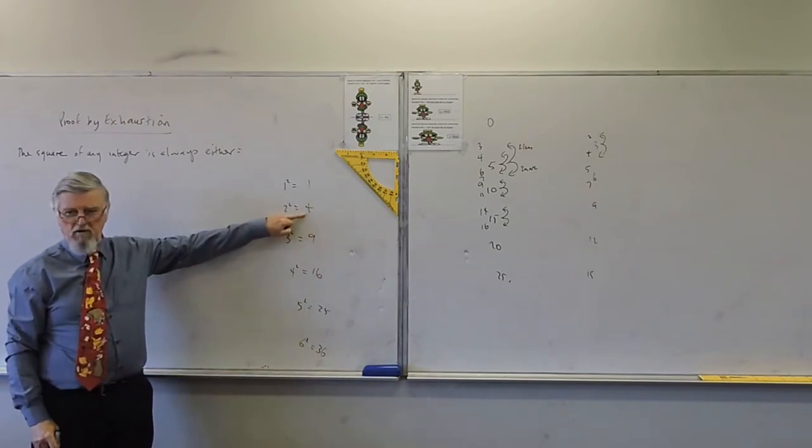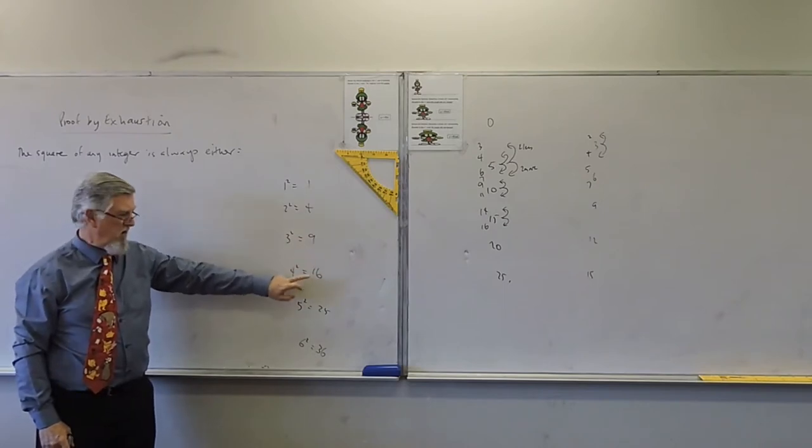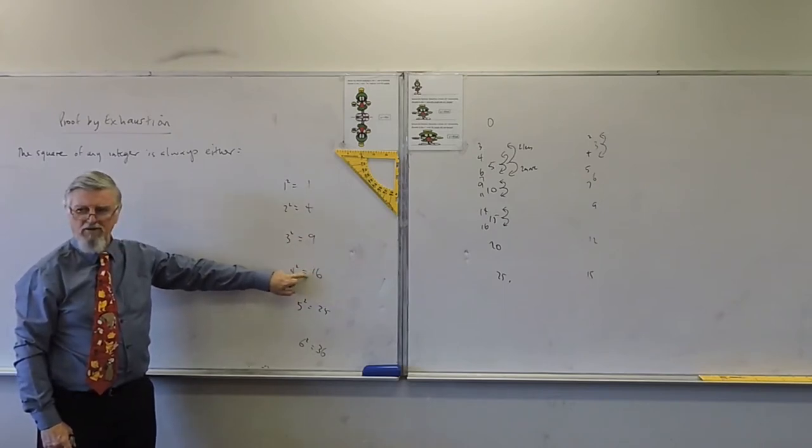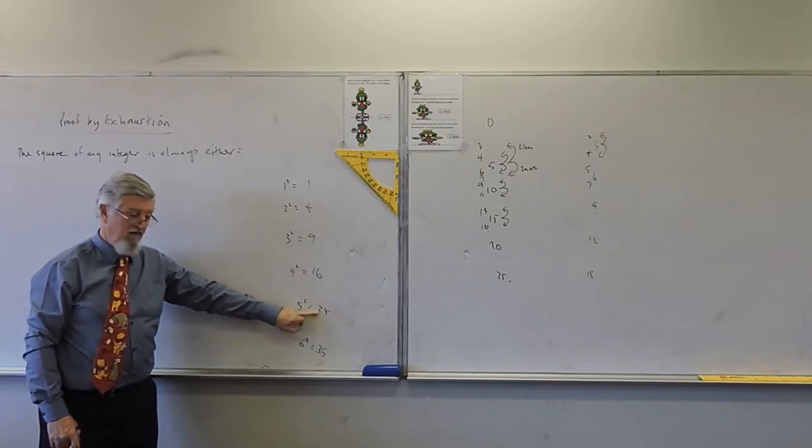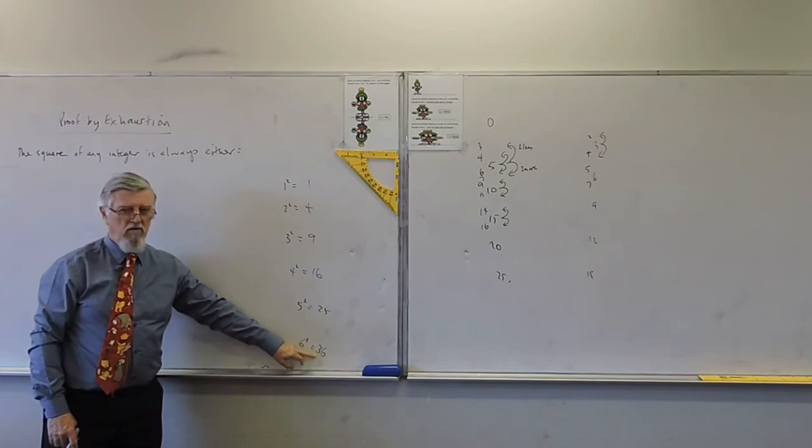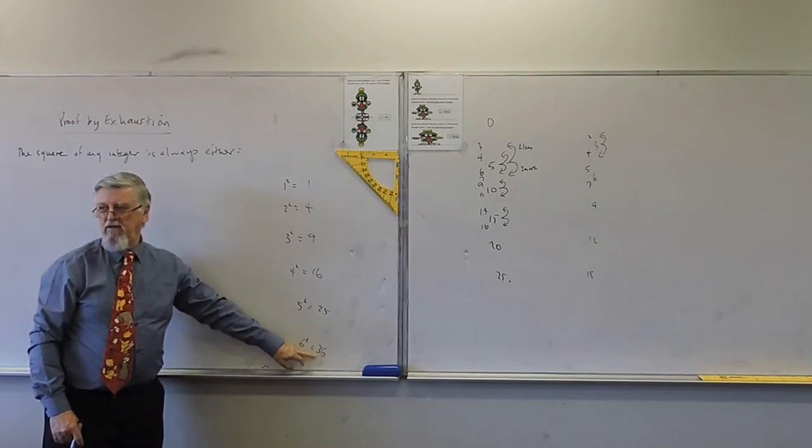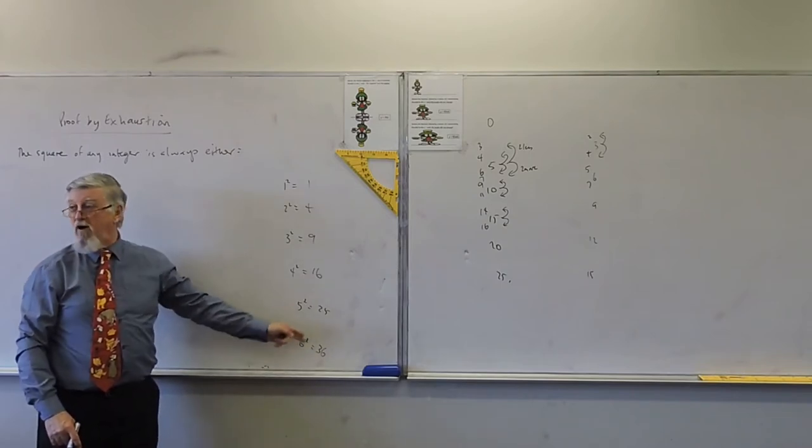That's one less than a multiple of five. One less than a multiple of five. One more than a multiple of five. A multiple of five. One more than. So what's our rule? They're either one more than a multiple of five, one less than a multiple of five, or a multiple of five.